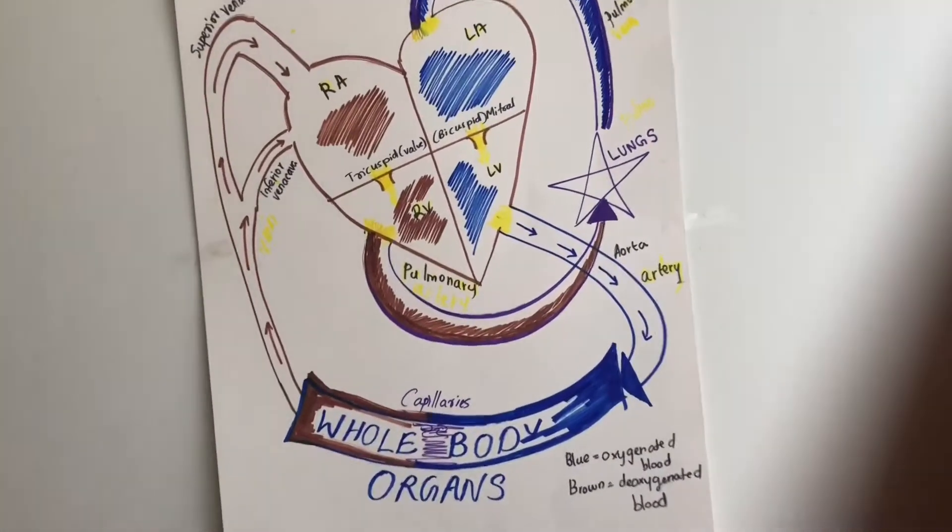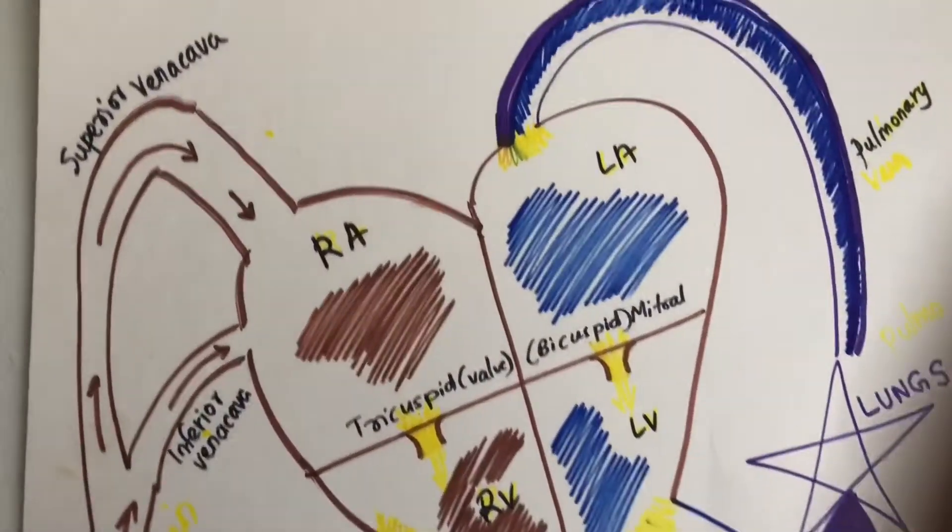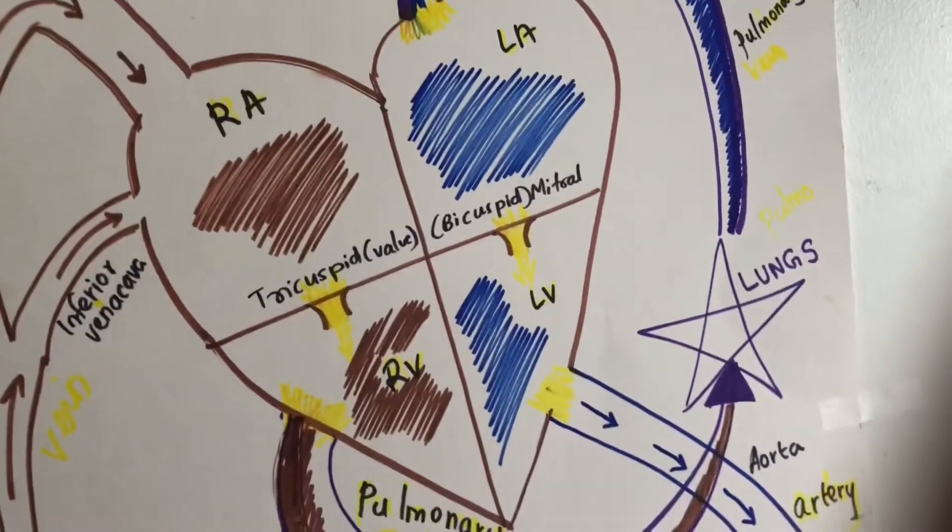It is a very important vein. Deoxygenated blood returns via the inferior and superior vena cava.